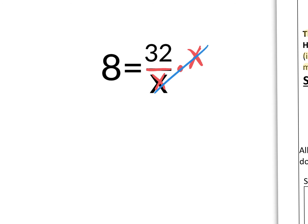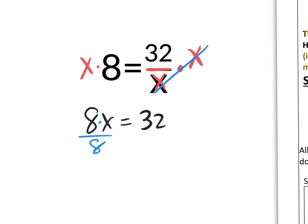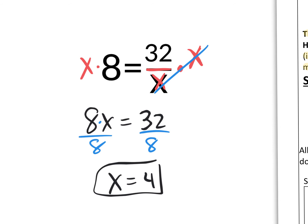If you multiply by x on one side, you have to multiply by x on the other side. So what do we really have here? We have 8x equals 32, which is really saying 8 times x equals 32. And if you divide by 8 on both sides, you get x equals 4. To verify: 32 divided by 4 really does equal 8.